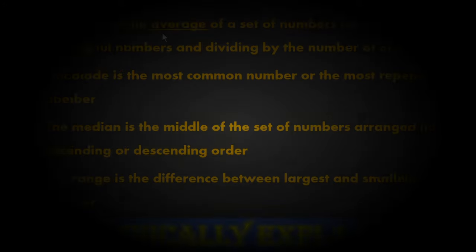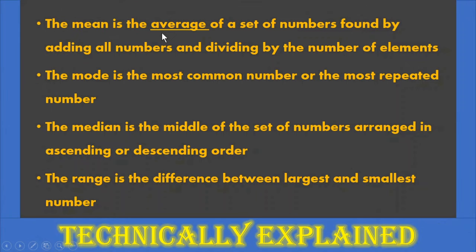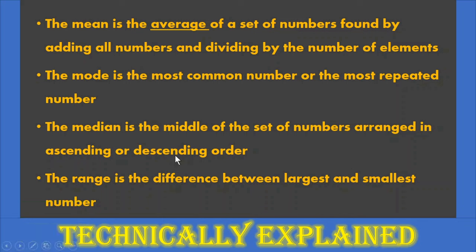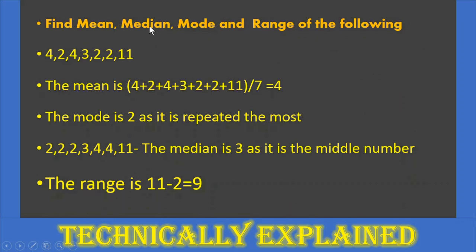Mean جو ہوتا ہے وہ actually average ہوتا ہے — average نکالنے کے لئے جتنی بھی numbers ہیں ان کا sum لے کر divide کرتے ہیں by the number of elements۔ Mode وہ number ہے جو سب سے زیادہ sequence میں repeat ہوتا ہے — mode is the most repeated number۔ Median کے لئے sequence کو ascending یا descending order میں arrange کر کے middle element لیتے ہیں۔ Range is the difference between the largest and smallest number۔